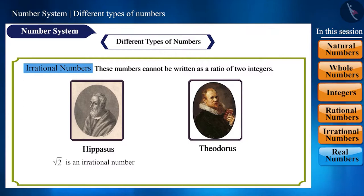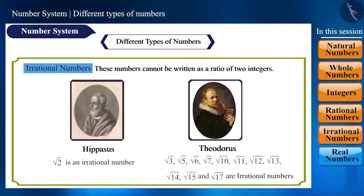After this, Theodorus of Cyrene proved that root 3, 5, 6, 7, 10, 11, 12, 13, 14, 15, and 17 all are irrational numbers.